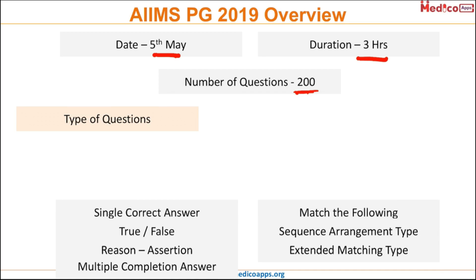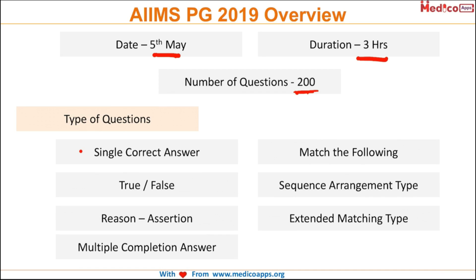Now let us look at the new types of questions. There is the single correct answer, which is the traditional AIIMS type question. The new patterns introduced are: true-false, reason assertion, multiple completion, match the following, sequence arranging, and extended matching type. These are the six new types of questions introduced in this year's AIIMS PG examination.